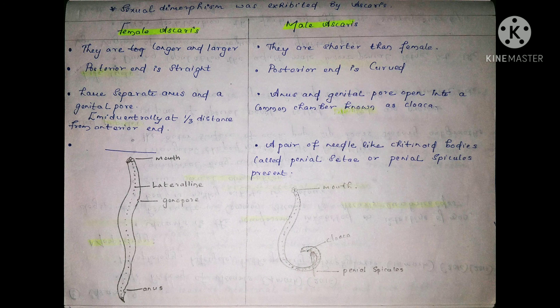The posterior end is straight for the female Ascaris. For the male Ascaris, the posterior end is curved. Female Ascaris have separate anus and genital pore, which is situated mid-ventrally at one-third distance from the anterior end.